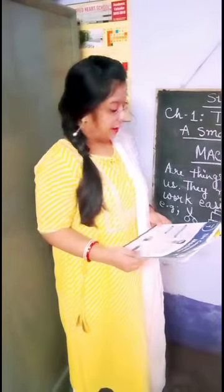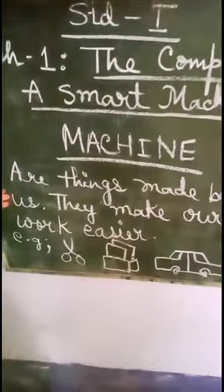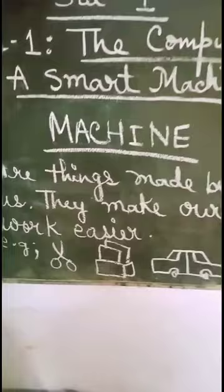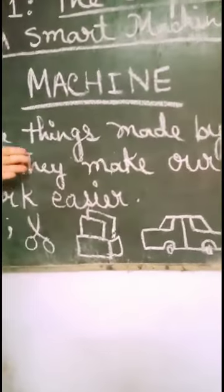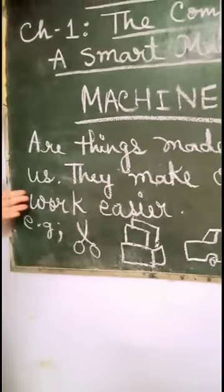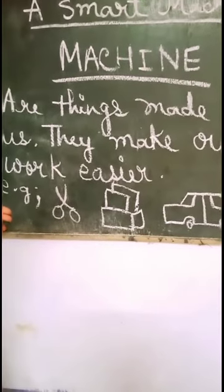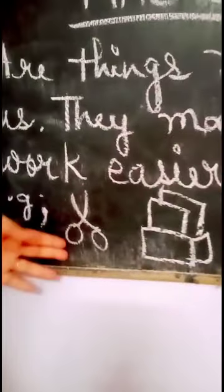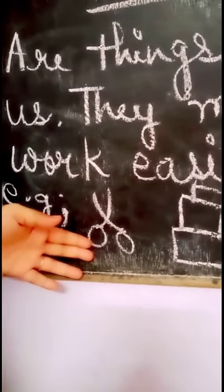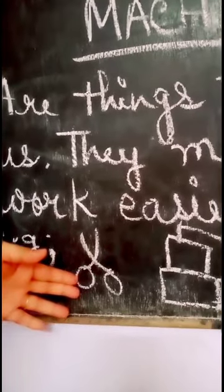Machines are things made by us. Thus, machines are manmade. They make our work easier. We can find examples of machines in our homes, like a pair of scissors, which is a simple machine used to cut paper or cloth.